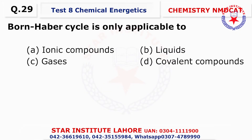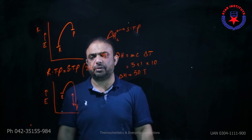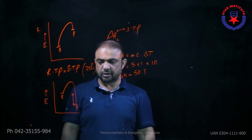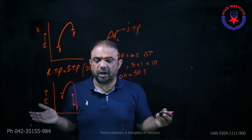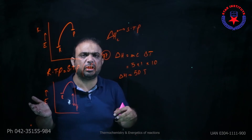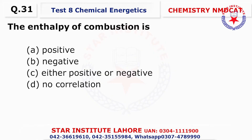Question number twenty-nine: The Born-Haber cycle is exclusively used to calculate the lattice energy of ionic compounds. Question number thirty: The amount of heat required to convert one mole of atoms into their gaseous state — this is the definition of heat of atomization. At STP, it is the standard heat of atomization.